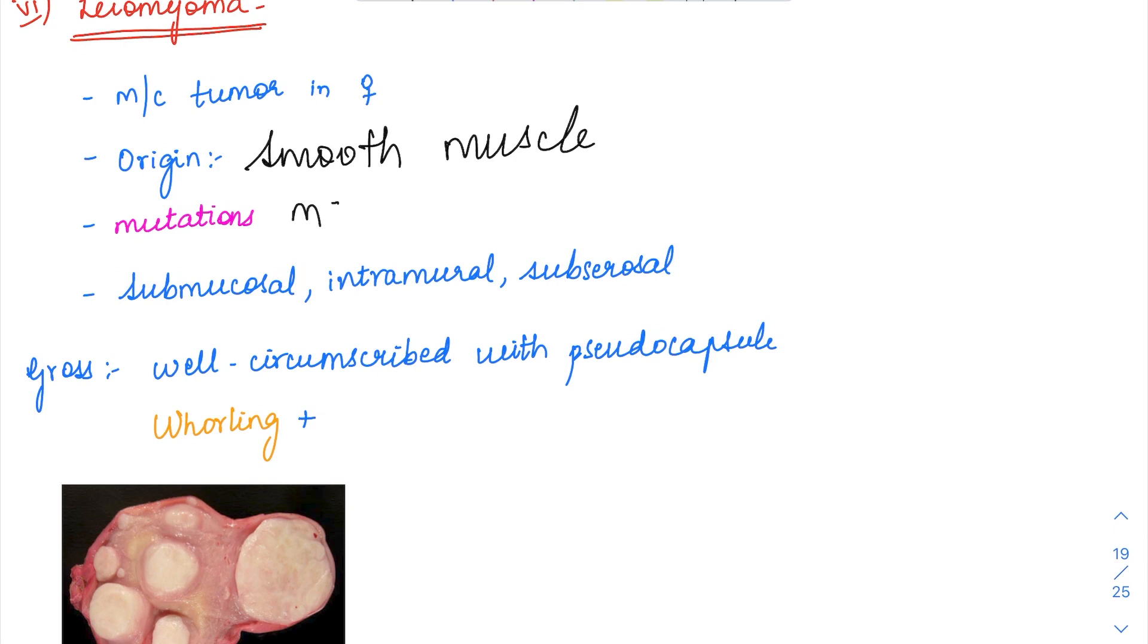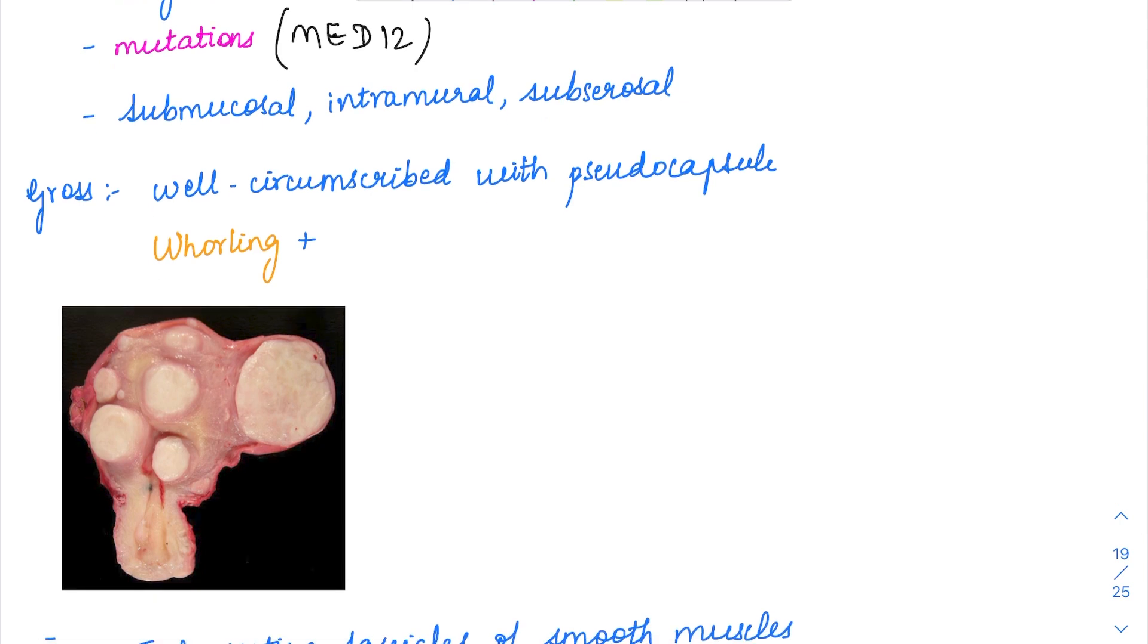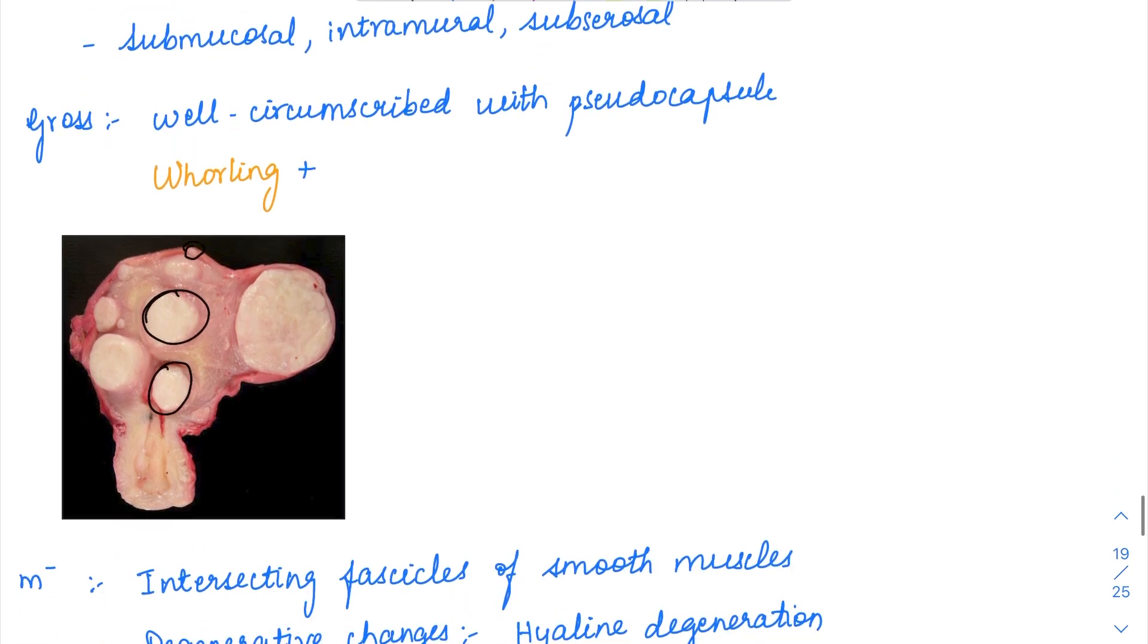Mutations associated with leiomyoma include MED12 mutations. Leiomyomas can be submucosal, protruding into the endometrial cavity, or intramural within the muscle layer. Leiomyomas, also called fibroids, can also be subserosal, located on the outer surface of the uterus.